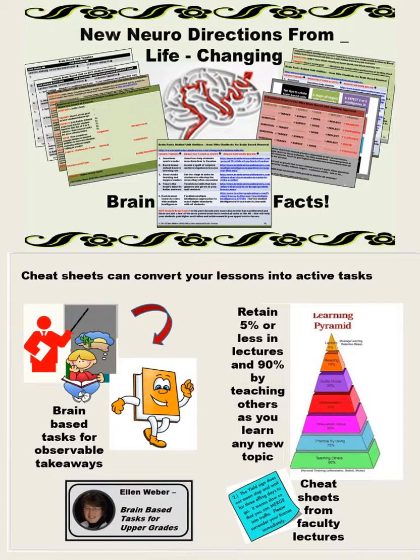New neurodirections give life-changing assessments when they're based on brain facts as these are. For example, you might use cheat sheets to convert a lesson into active tasks. Assessment tasks in these materials double also as learning tasks — meaning the directions double as rubrics, so the directions students use to create a task are identical to the assessment criteria you use to grade it. That makes them intelligence fair. And considering that students retain 5% from lectures and 90% by doing and actively learning, these cheat sheets, suggestions, and assessment tasks make sense from a learning perspective as well.